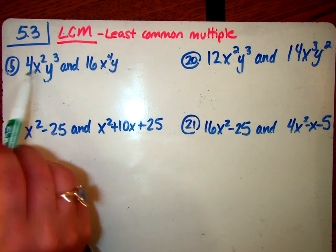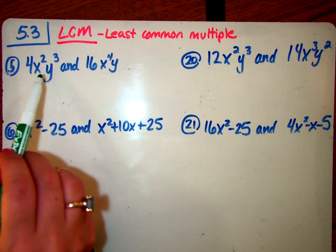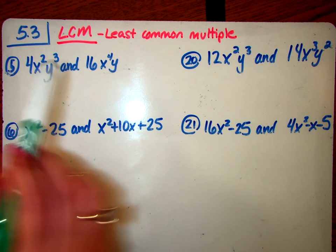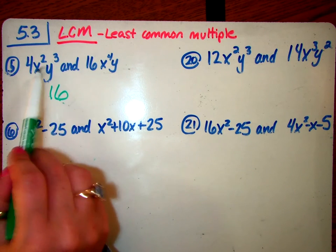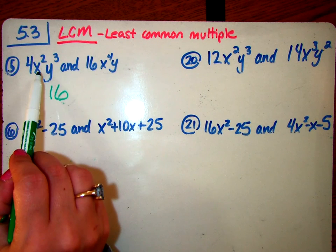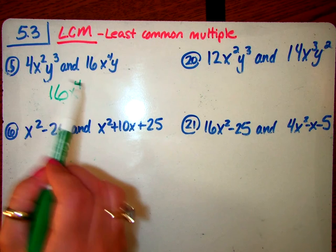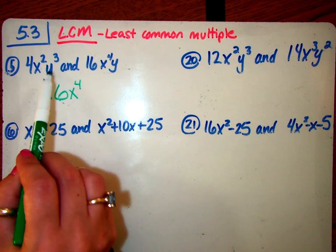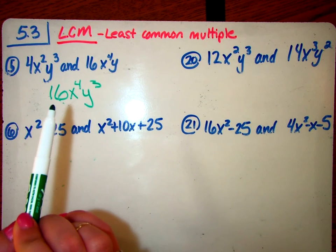So when I look between these two terms, I say to myself, 4 and 16, which is the first number I come to that they both share? Well, it's 16. Now I'm going to look at the x's, and I want to take the highest exponent, so x to the 4th. Then I look at my y's, and I'm going to take the highest y's, y cubed. And this is the least common multiple.